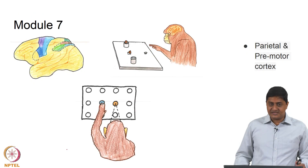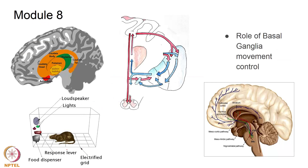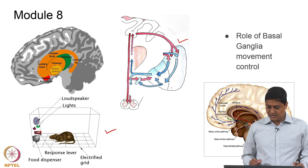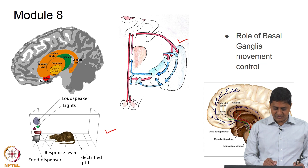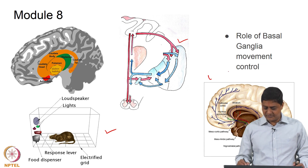In module 7 we will be discussing the parietal and premotor cortex, and how they bring context and appropriateness to movements. In module 8 we will be discussing the basal ganglia and its role in movement selection and reward-related behavior. What is shown here is a reward-related experiment, and the inhibitory and excitatory pathways — the direct, hyperdirect, and indirect pathways — are shown along with the structures responsible.